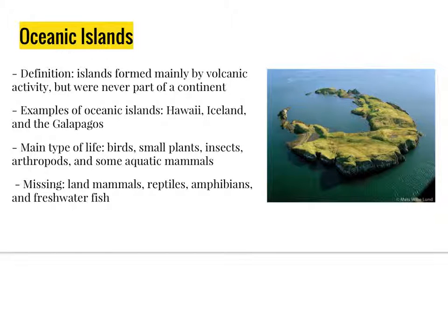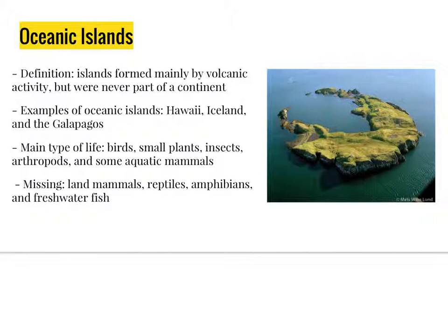Oceanic islands are defined as islands formed mainly by volcanic activity that were never part of a continent. Examples include Hawaii, Iceland, and the Galapagos. The main types of life found there are birds, small plants, insects, arthropods, and some aquatic mammals. There is an abundance of these organisms and many similar species of each kind, which is called radiation. Missing from oceanic islands are land mammals, reptiles, amphibians, and freshwater fish, because it is too hard for them to cross a vast ocean. The species that are found there are usually small and can float, swim, or fly to the island, and they are quite often similar but not identical to the nearest mainland. These patterns are similar across all oceanic islands.